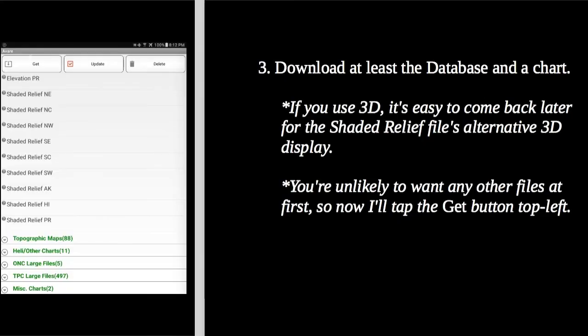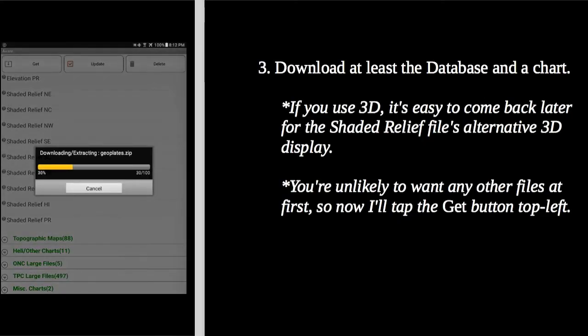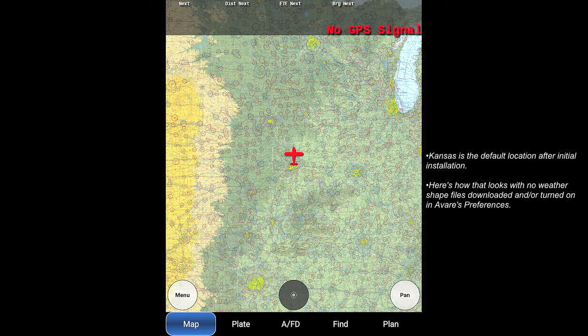That's it. Now tap the get button to start the download of all the files you've selected. Tap the back key on your Android device. Now you're all set to start exploring Averre.